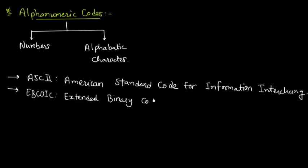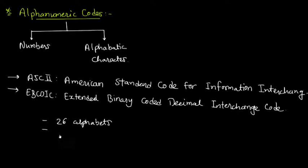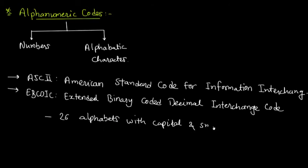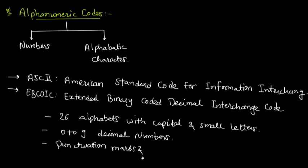These codes consist of symbols to represent 26 alphabets with capital and small letters, 0 to 9 decimal numbers, and some punctuation marks and other symbols.